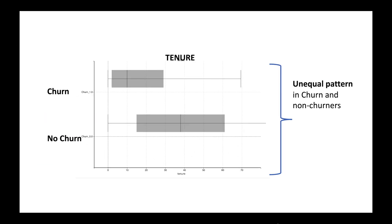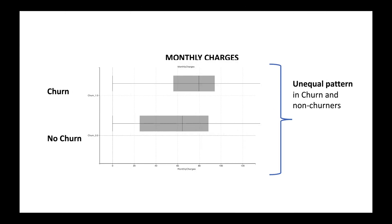We can do a similar analysis for numerical variables using a box plot visualization. Shown here is an example of tenure versus the target variable. We can observe that customers who have less tenure are likely to churn. Shown here is an analysis of monthly charges — you will observe that high monthly charges are also reasons to churn.